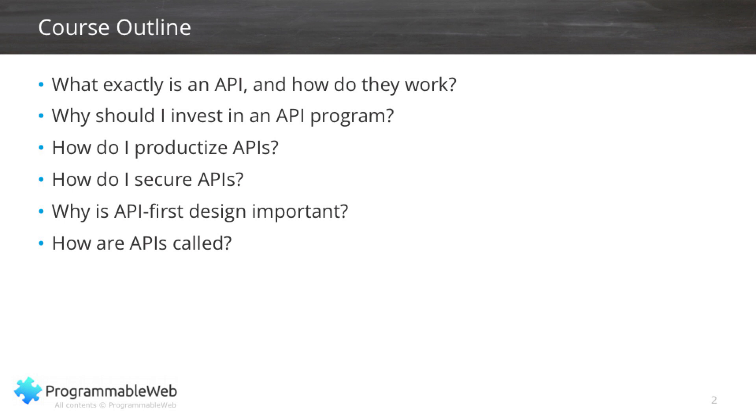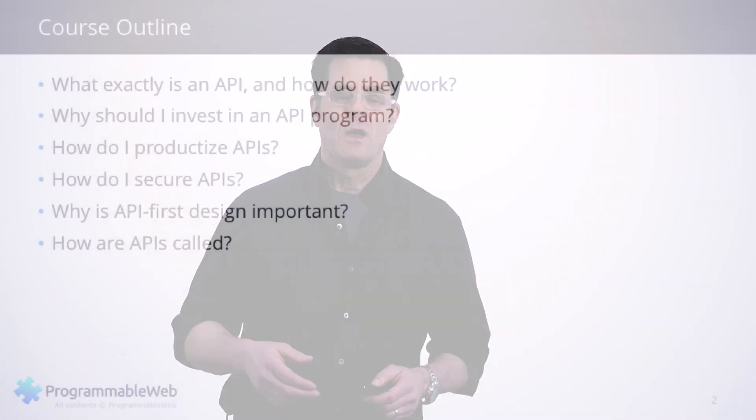How to secure APIs — because APIs are a technology that you put onto a network in most cases, and when you put something programmatic like an application programming interface onto a network, hackers love to hack at it. So you have to figure out a way to keep them from exploiting your APIs in a way that could damage your company or hurt your customers. Why is API-First Design important? We will talk about that in this video as well, and then we'll get to how it's done when we consume APIs with a hands-on component at the very end of the series.